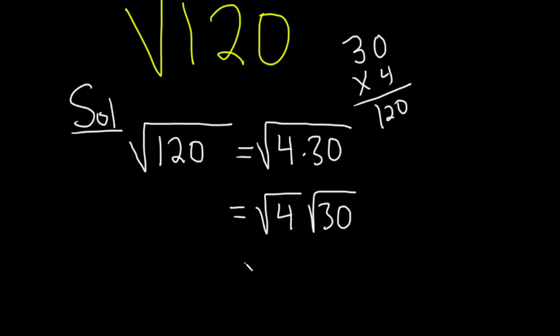And the square root of 4 is 2, and then we just have the square root of 30.